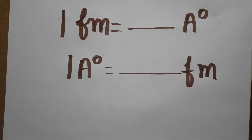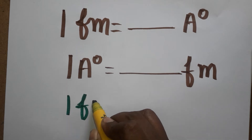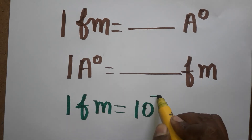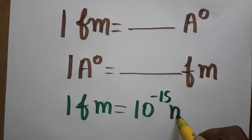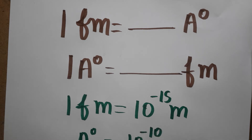Today we are going to learn how to convert from femtometer to angstrom unit and angstrom unit to femtometer. Before converting both units, I am going to relate them with the meter. One femtometer is equal to 10 power minus 15 meter; one angstrom unit is 10 power minus 10 meter.